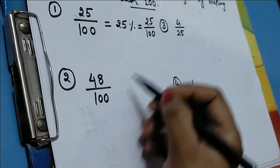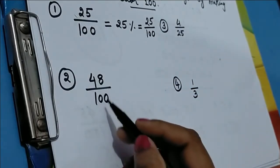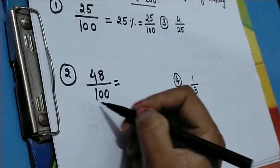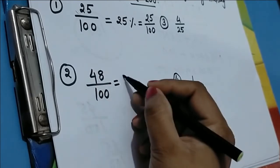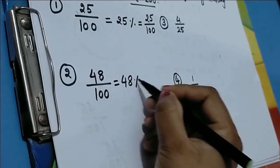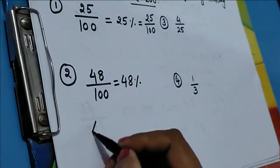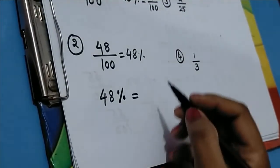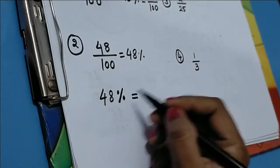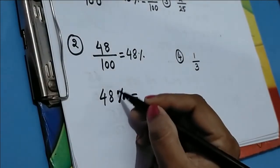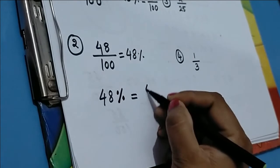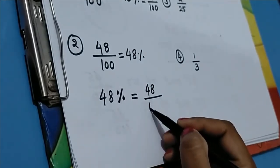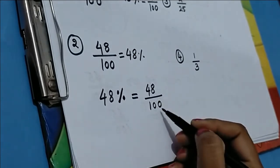For example, 48/100 already has denominator 100, so we can directly write the numerator with a percentage sign: 48 percent. Reversing this, if we have 48 percent and want to convert it to a fraction, we remove the percentage sign and place 100 in the denominator.